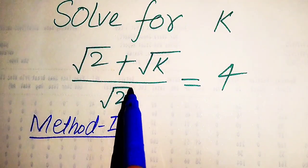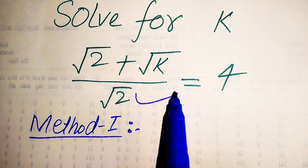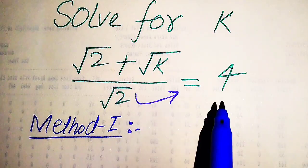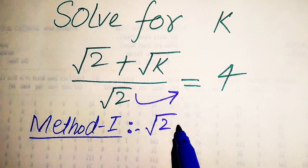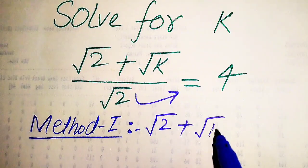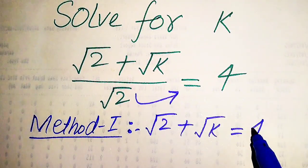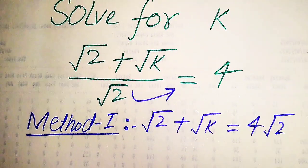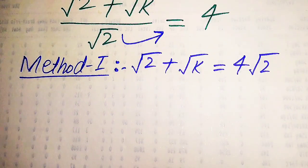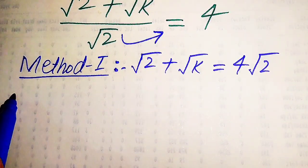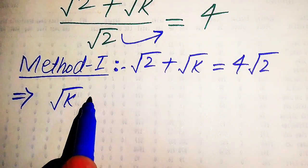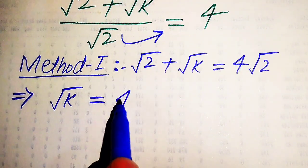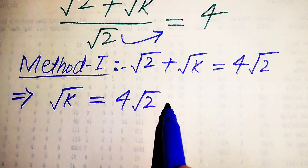In the first method, you see square root of 2 is in the left hand side — we need to move it to the right hand side. So when we move it to the right hand side, it will be written as: square root of 2 plus square root of k equals 4 multiplied by square root of 2. Further, in the next step, we move the square root of 2 from the left hand side to the right hand side, and it is written as square root of k equals 4 times square root of 2 minus square root of 2.